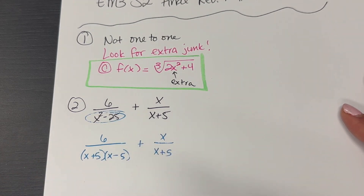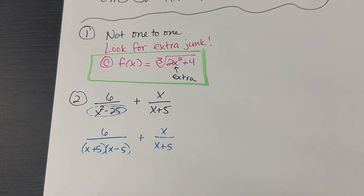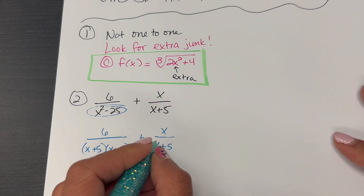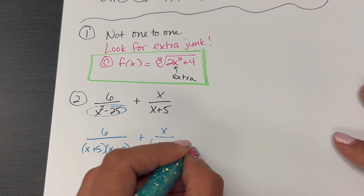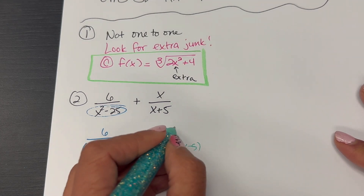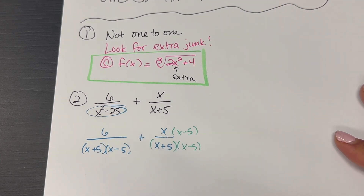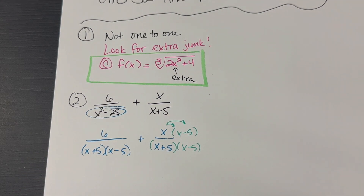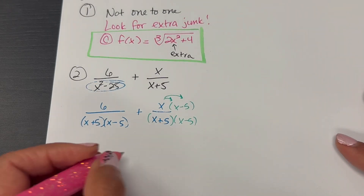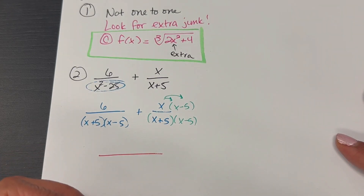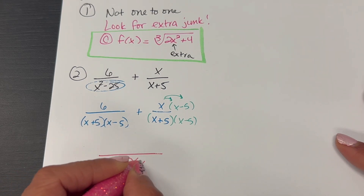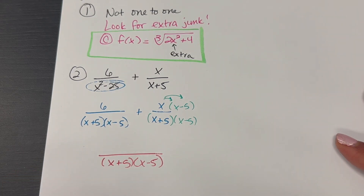Now I can see that the second fraction has X plus 5, but it's missing an X minus 5. So I need to multiply by X minus 5. Whatever I do to the bottom, I've got to do to the top to keep it balanced. I'll need to distribute that up there. Now I've got a common denominator, so I'm allowed to add the fractions. When you add fractions, you keep the denominator: X plus 5, X minus 5.